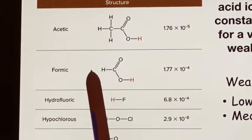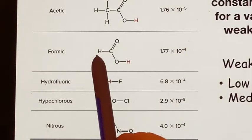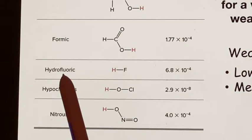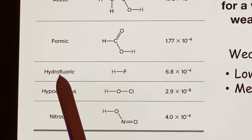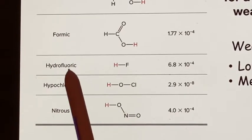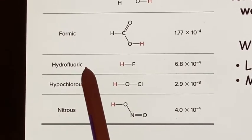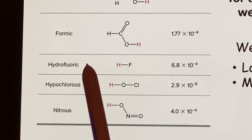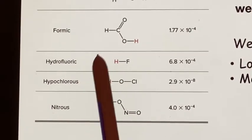You will see that throughout here. Formic acid, same thing. It's not this H that comes off. It's the one that's attached to an oxygen. Here's hydrofluoric acid. The one in this list that isn't an H attached to an O. This is the one in that halogen column that didn't end up being a strong acid. It's a weak acid.